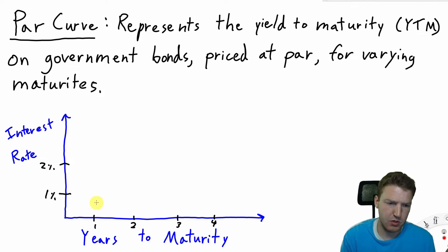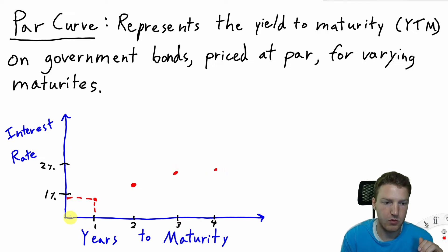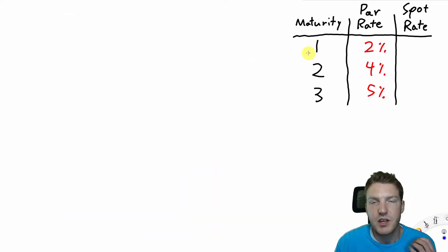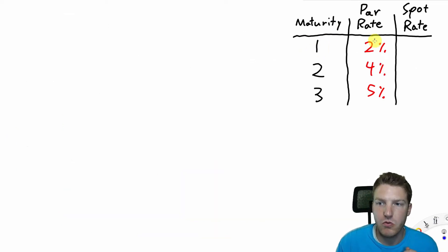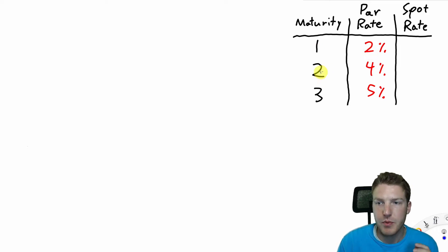For a one-year bond, if the coupon rate is slightly under 1%, this is where it matches the rate demanded by investors. And then for two years out, the interest rate raised a little bit, and three years out, four years out. If we draw a line between all these dots, we're essentially finding the par curve. In the top right-hand corner of the screen, we have the par rate curve plotted out as a table. For a government bond with a maturity in one year, it would pay a 2% coupon rate. For a two-year bond, it would pay 4%, and three-year would be 5%.